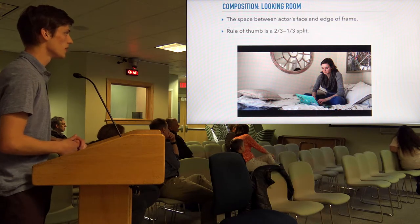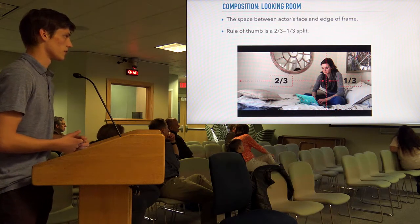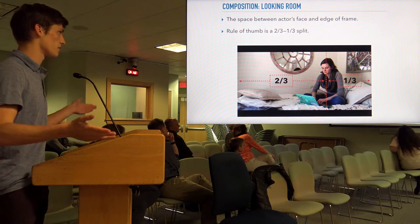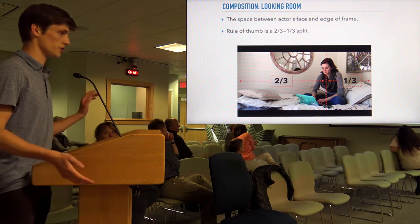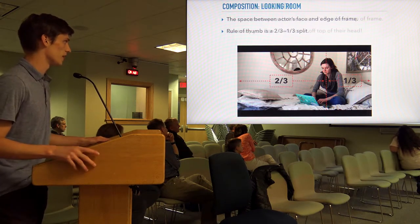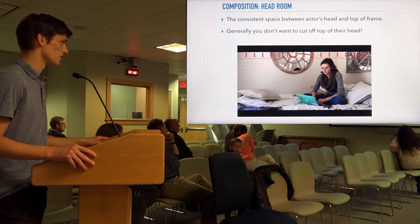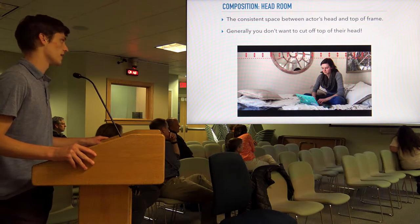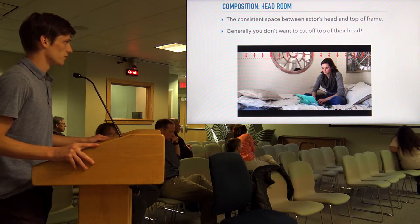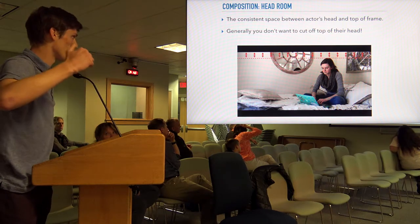Then we have Looking Room, which is the space from where your actor is facing to the edge of the frame. The rule of thumb is a two-thirds, one-third split, following the Rule of Thirds. Along with that, you have Head Room — the space from the top of the actor's head to the edge of the frame. Generally you don't want to cut off their head, and especially in a full shot you want to keep their full body in frame.